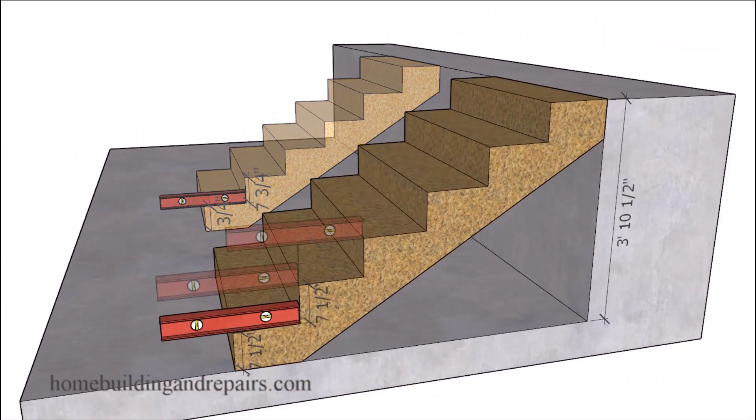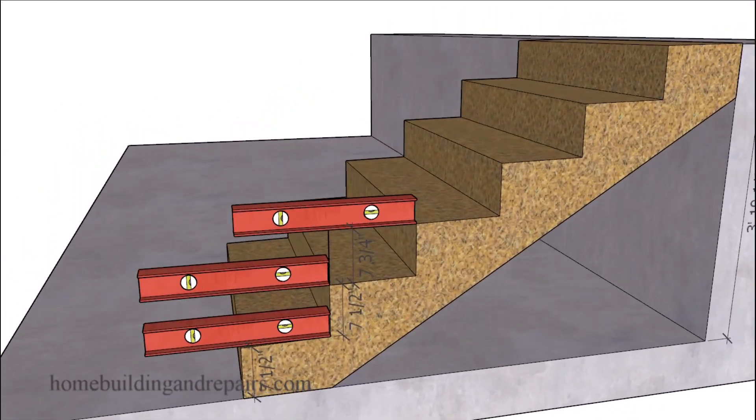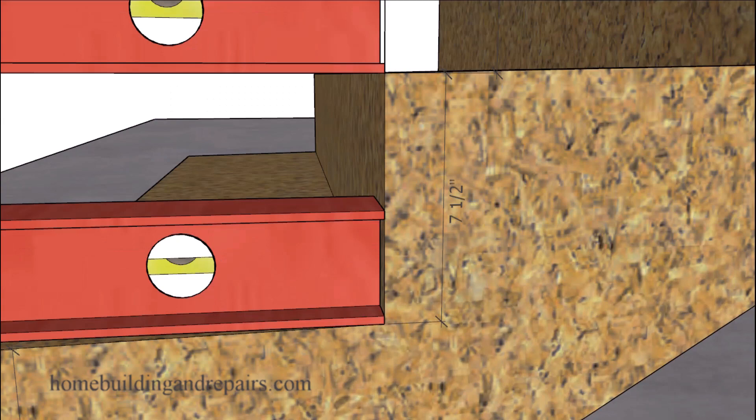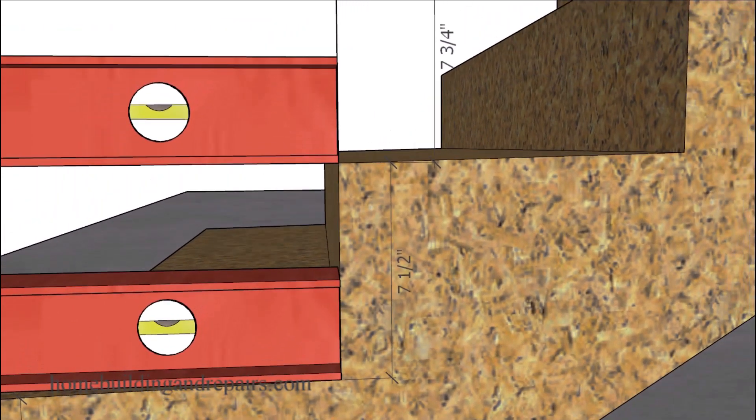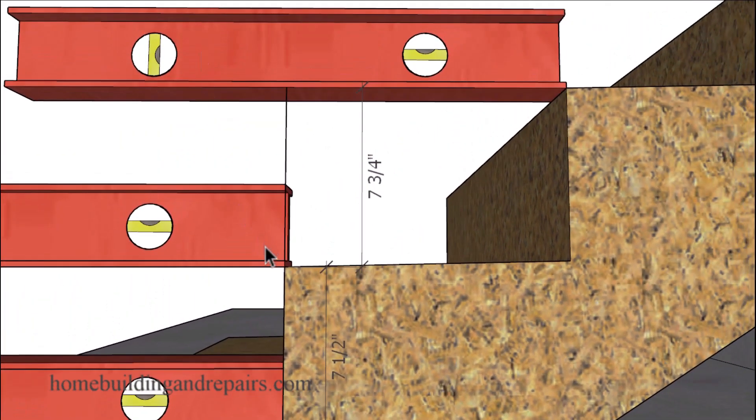However on this one here we're going to need to measure the distance from the front of the riser on the lower step to the front of the level riser on the upper step to get the riser height we're actually looking for. And in this example here it will be seven and three quarter inches.